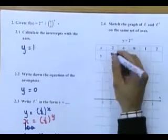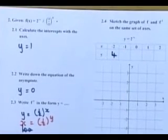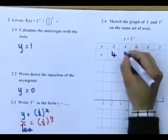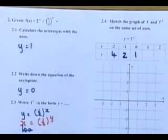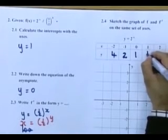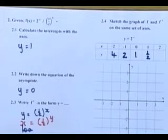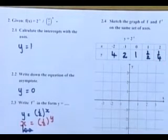If we fill this table: if x is equal to minus 2, the corresponding y value is 4, absolutely correct. If x is minus 1, the corresponding y value is 2. If x is 0, y is 1. If x is 1, y is equal to half. And if x is equal to 2, y is equal to a quarter.